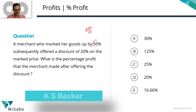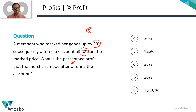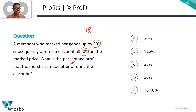Markup is given as a percentage, discount is given as a percentage, and what we need to compute is another percentage — the percentage profit. It's a pure percent question, so it makes eminent sense to assume something to be 100.